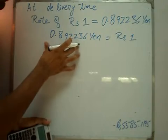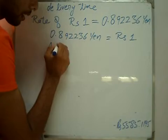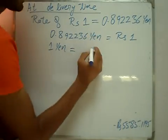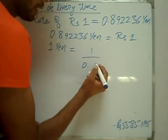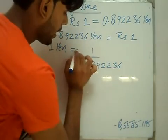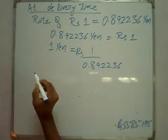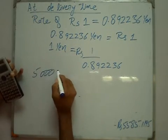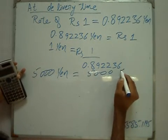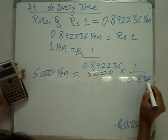So, 1 Yen at delivery time is equal to 1 over 0.892236. Therefore, 5000 Yen multiplied by 1 over 0.892236.